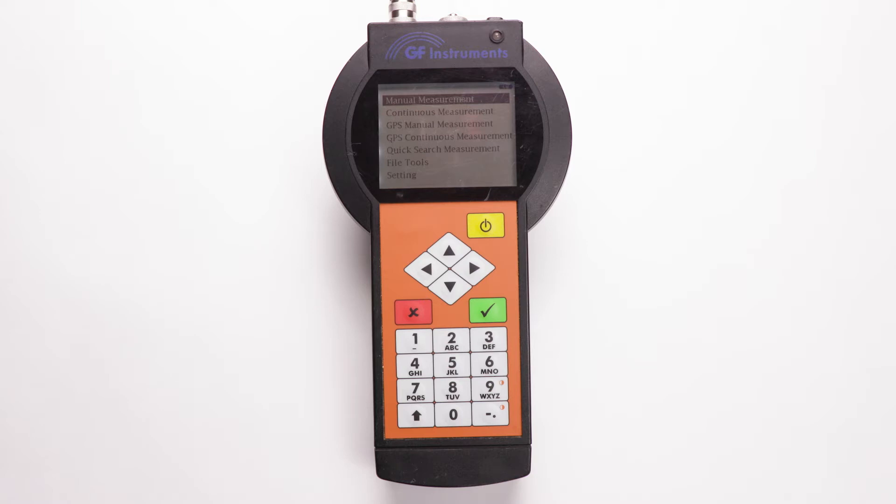If you hold in the function key, which is the up arrow in the bottom left-hand corner of the control unit, numbers will be entered directly, skipping the text letters. The main menu screen lists five options for collecting data, access to the file tools, and the settings menu.